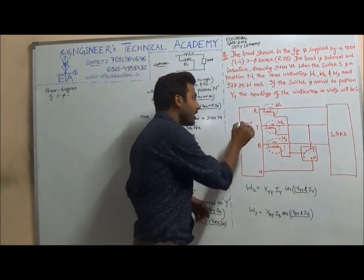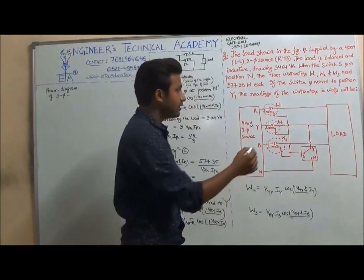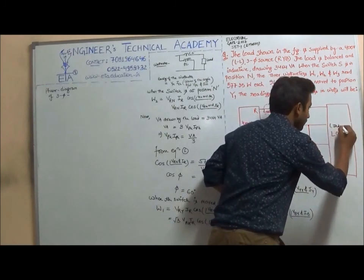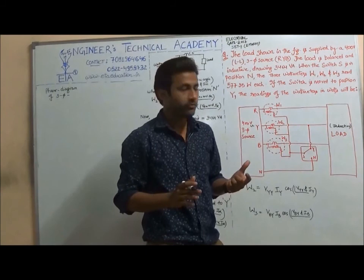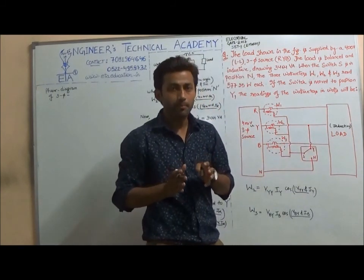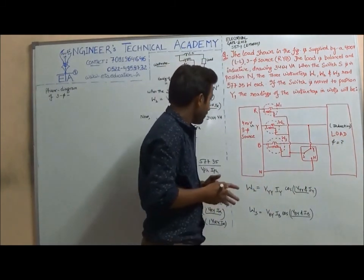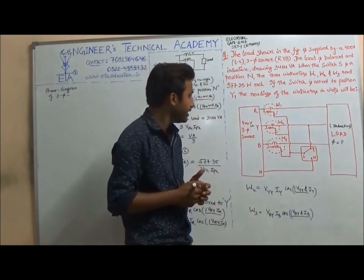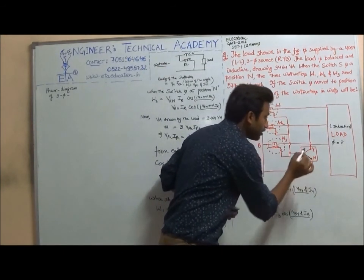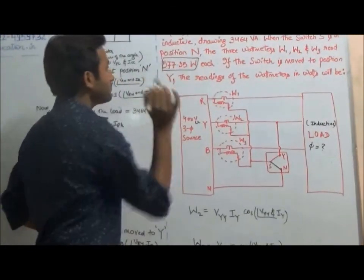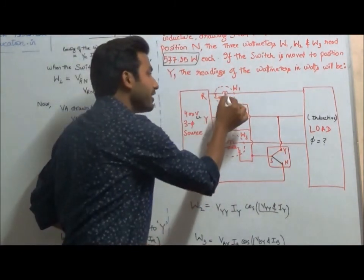In this question we have given a 400 volt 3-phase source. The 400 volt here is line-to-line. RYB is the sequence and the load is inductive. Note that inductive here does not imply that the current is lagging the voltage by 90 degrees — it means there is a resistive component as well. We have to find out the angle of the current lagging from the voltage. Between the source and the load, 3 watt meters W1, W2, and W3 are connected. When the switch is at position N, the watt meters read those values. When the switch is moved from N to Y, we have to find the new watt meter readings.